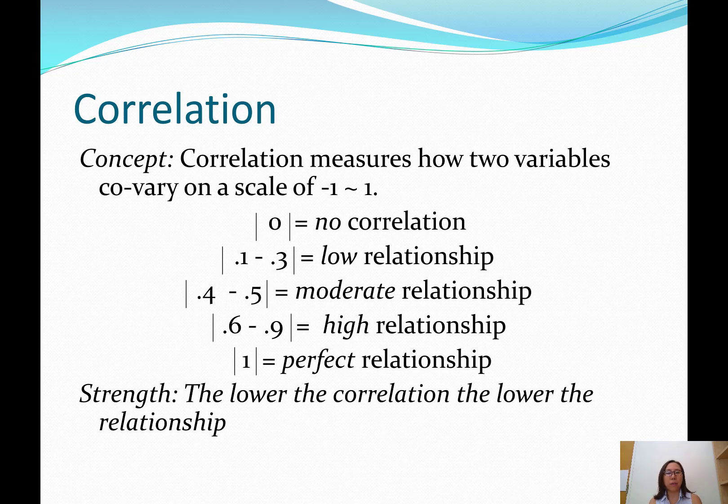But for now, let's talk about the strength. 0 means no relationship, and the further the number goes away from 0 towards 1, the stronger the relationship. From 0.1 to 0.3, we say that's low relationship. 0.4 to 0.5, we say that's moderate. 0.6 to 0.9, we say that's high relationship, with 1 being a perfect relationship.